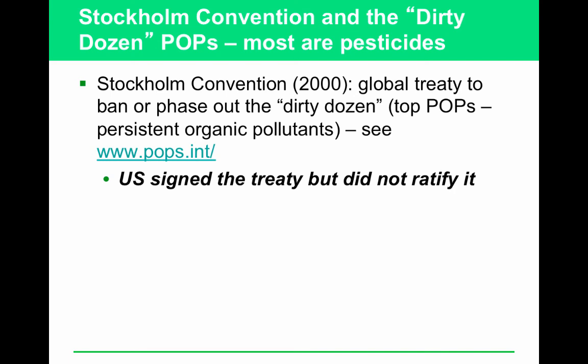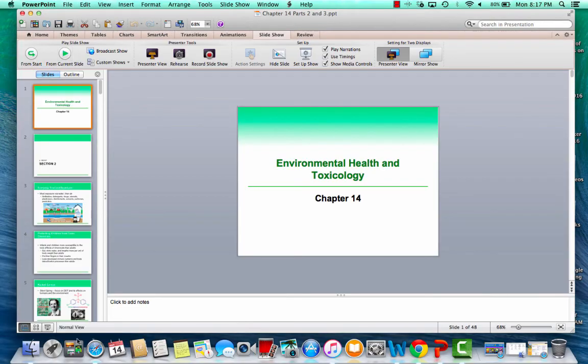The Stockholm Convention is a global treaty that bans or phases out the dirty dozen. The US signed but did not ratify it — meaning we agreed it was a good idea but did not commit to action. This is frequently referenced on the national exam as an example of an international treaty the US did not fully sign off on. Be able to differentiate between US laws and international laws.